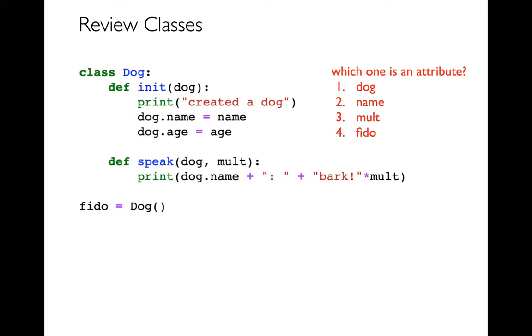So this was the first snippet of code that we are starting with in that review doc, which you've already answered these questions. And so the first question, well, which one of these things was an attribute? Dog, name, mult, Fido.